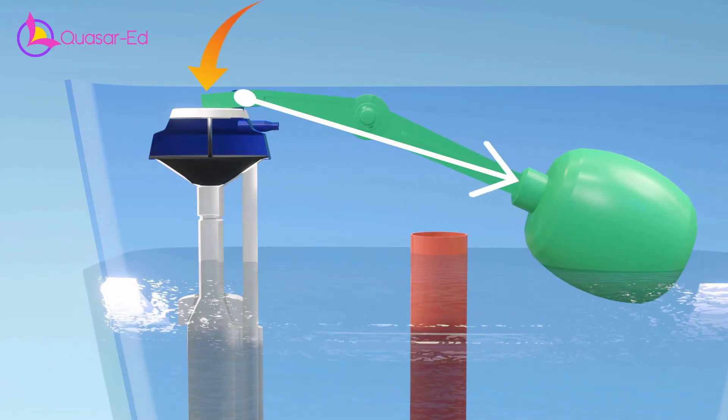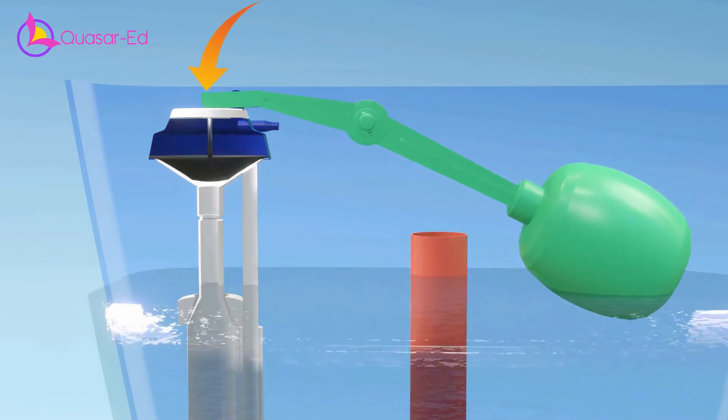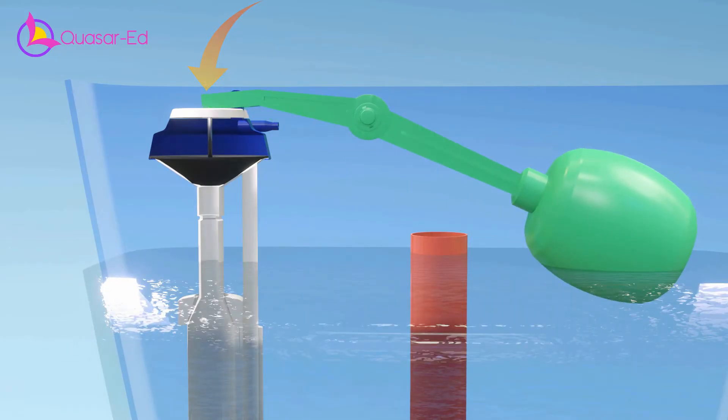By making the lever arm longer to one side, it can have enough force to push the diaphragm and cut off the high pressure water from the main storage.